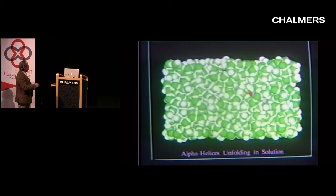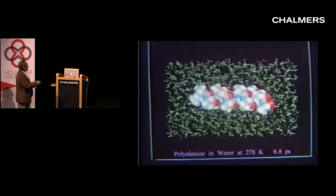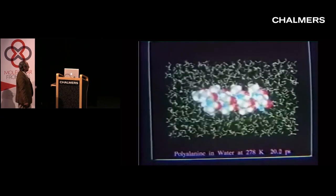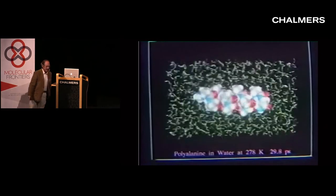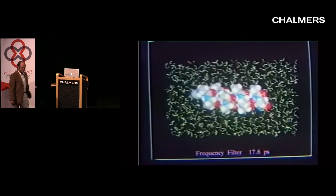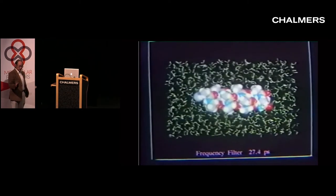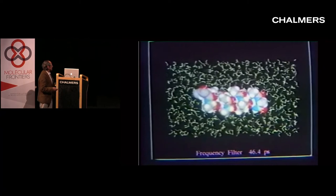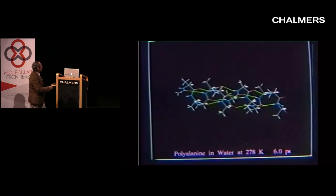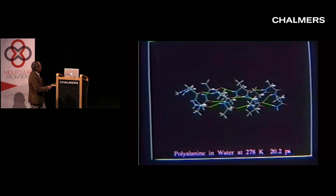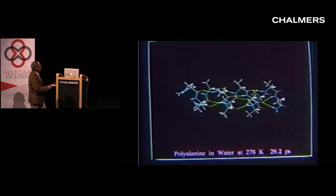Alpha helix in the box, jiggling around. I made this movie in 1990 when I got a chance to talk to Linus Pauling in a lecture, and it was really a thrill to show him the alpha helix. The first set of movies had it all backwards because I forgot to reverse the negative. This just shows an alpha helix at room temperature — it's very stable. Hydrogen bonds are breaking and reforming, but nothing dramatic is happening.